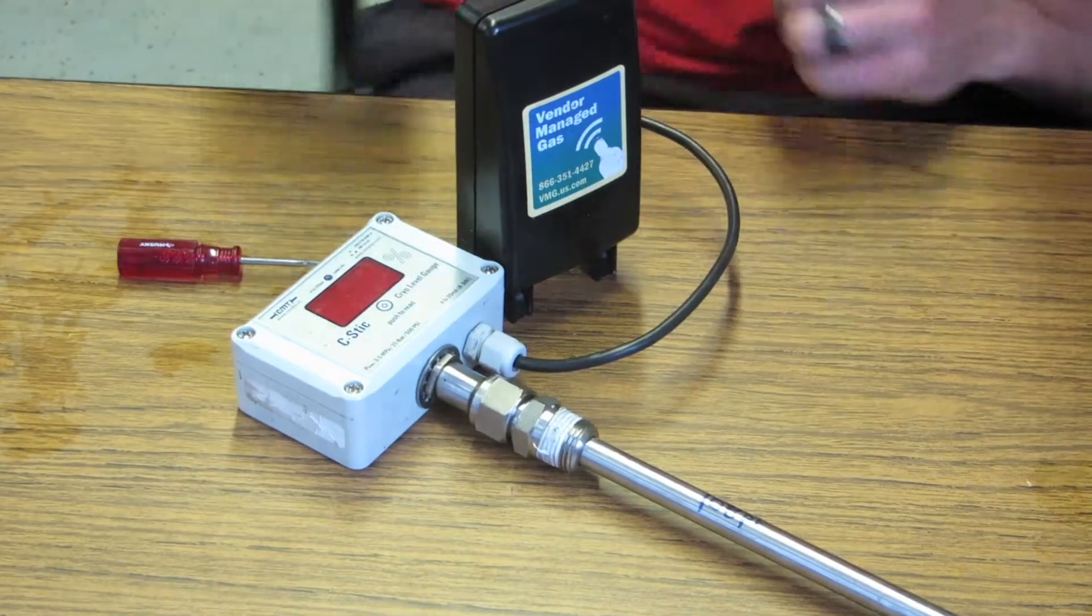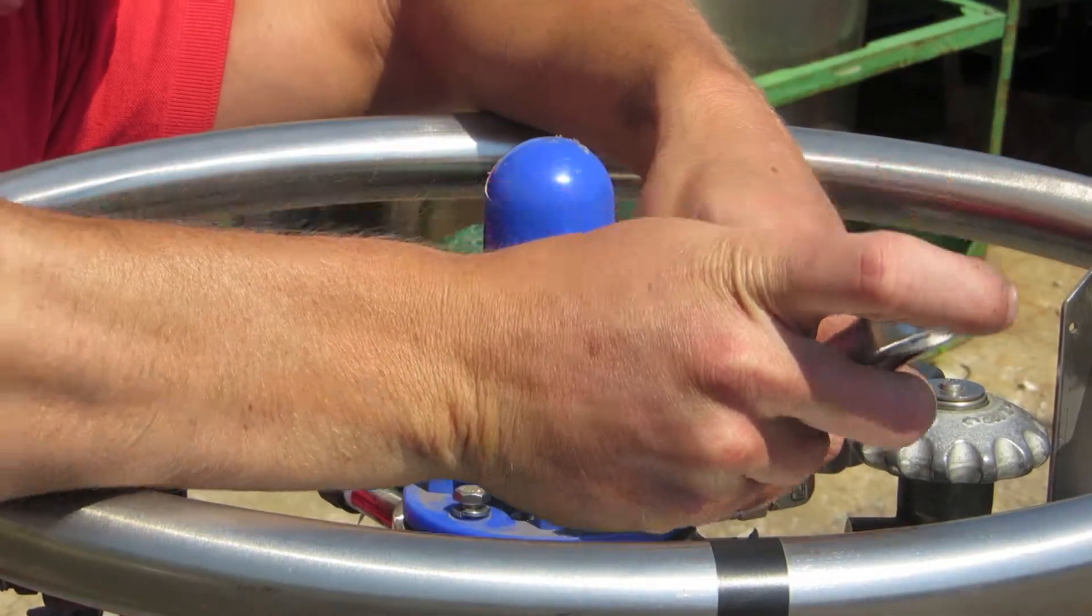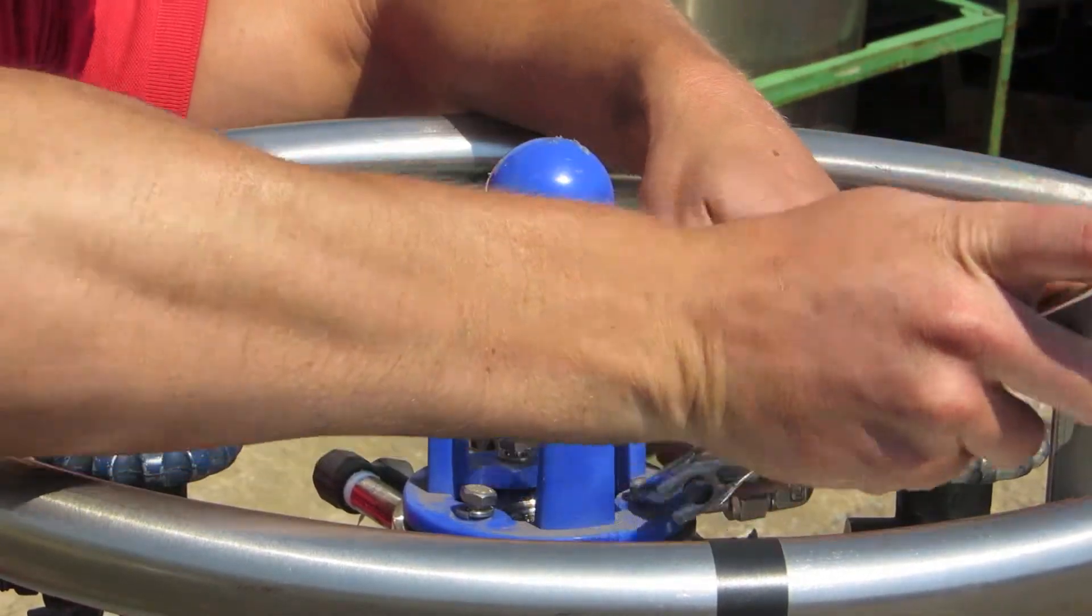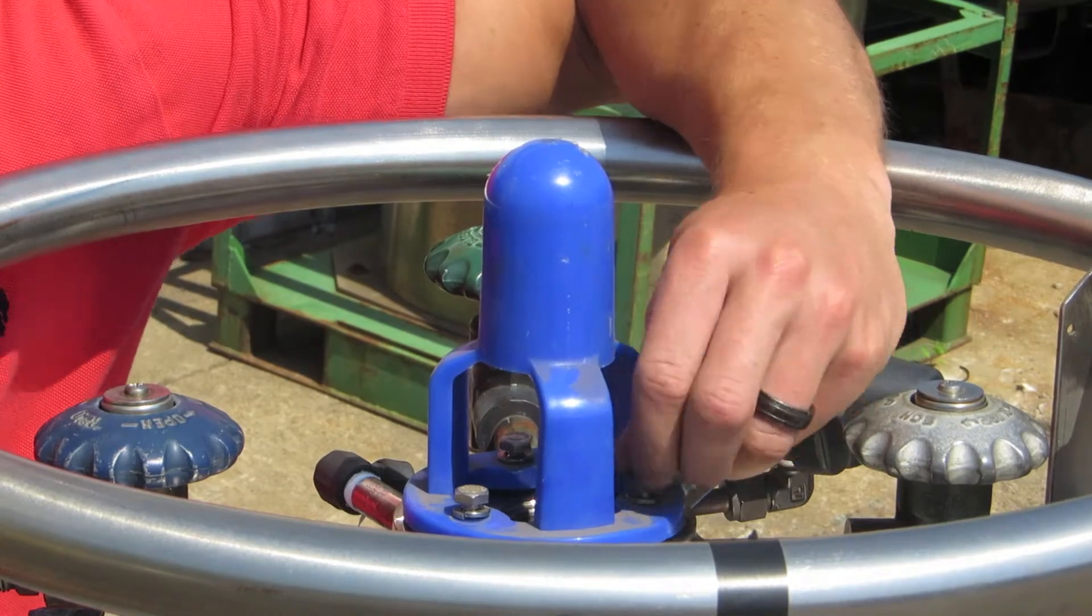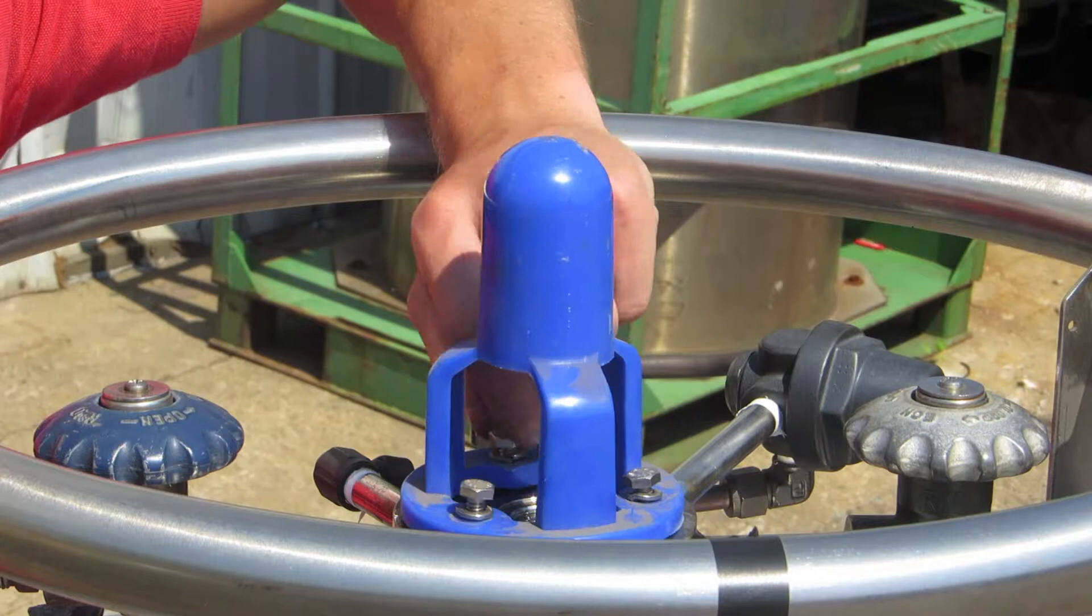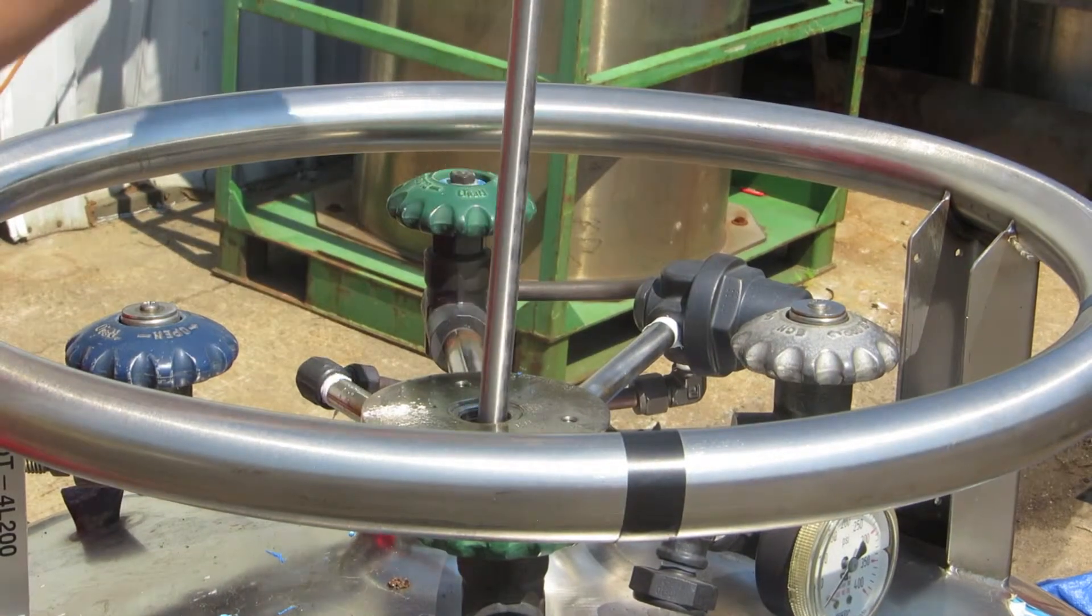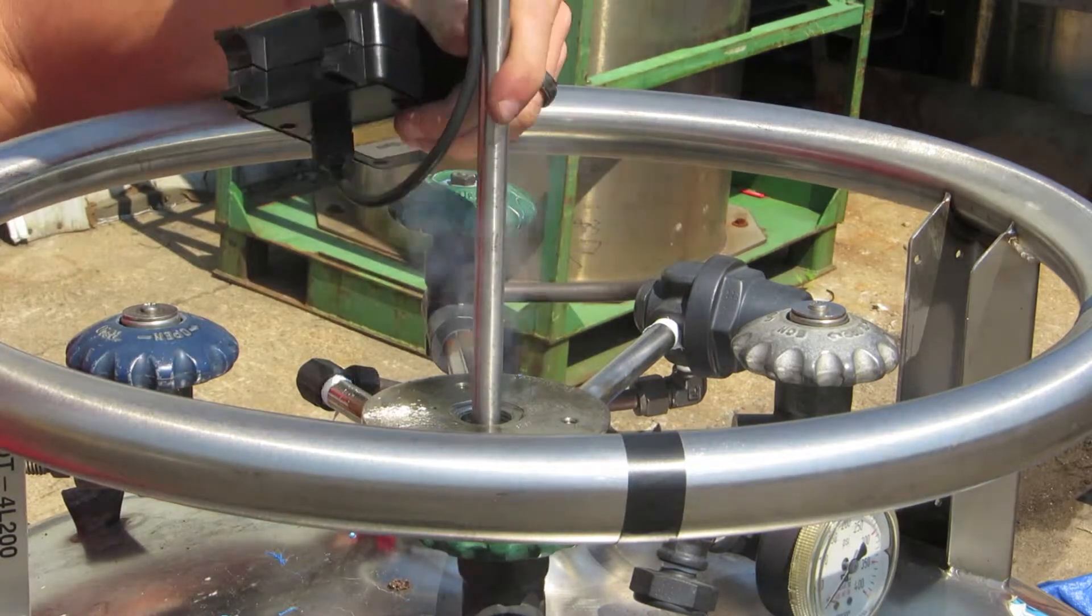All right after you have that faceplate back on you're ready to go ahead and get your tank ready. So next we're going to prep the tank. Just go ahead and remove the rubber bracket that goes around the top center port and also remove the gauge or whatever instrument you may have on the top. Sometimes it's just blocked off. Sometimes it's a gauge.